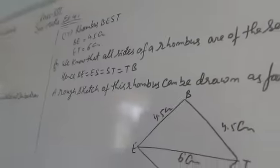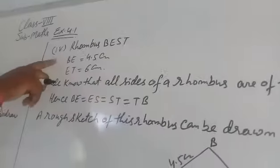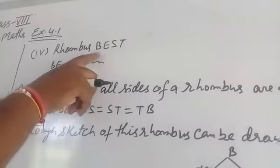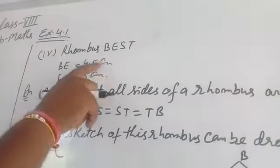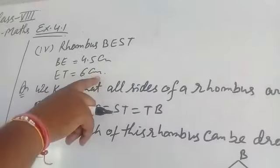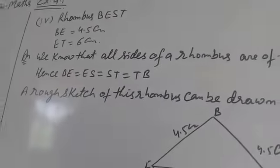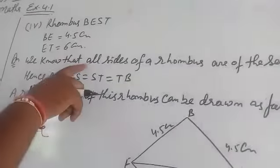Now, question part four. Rhombus BEST with BE = 4.5 cm and ET = 6 cm. We know that all sides of a rhombus are of the same length.